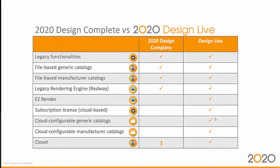If we look at the Full version of 2020 Design Live, which corresponds closely to Complete, it embeds all the capability of Complete plus more. It has all the legacy functionalities, meaning all the functionalities you're currently used to in 2020 Design are accessible through 2020 Design Live. You can reuse all your old kit files, access all your file-based generic catalogs, file-based manufacturer catalogs, and the legacy Redway rendering engine. So you're not losing any of those capabilities.